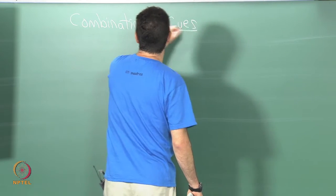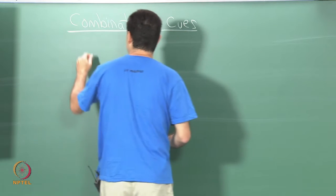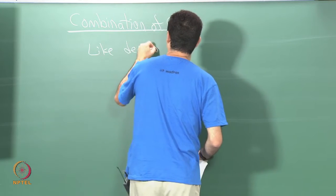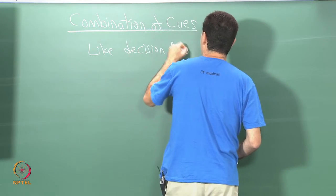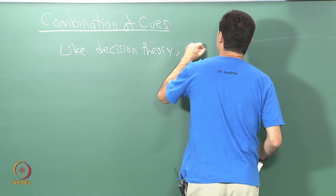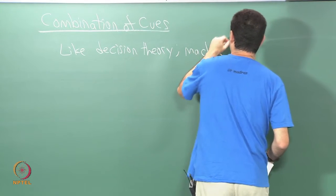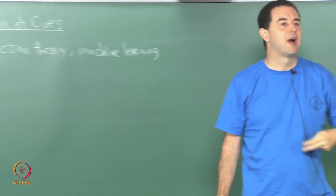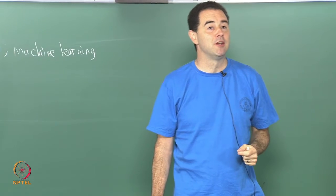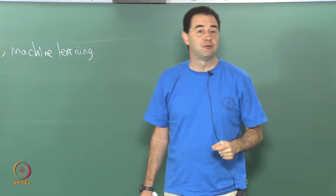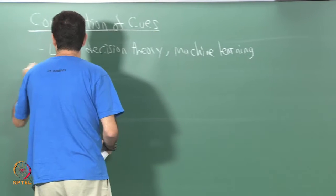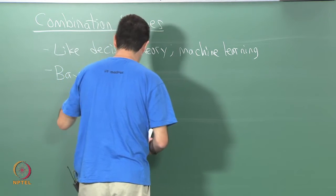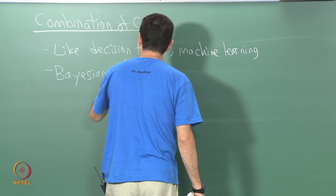To combine the cues, one way to think about how this happens is it's very much like statistical decision theory, which also shows up in machine learning. If you wanted to construct some kind of model of how the brain might be doing this, perceptual psychologists very often like to consider it to be a kind of example of a Bayesian or probabilistic model.